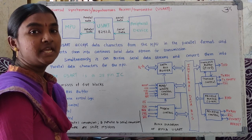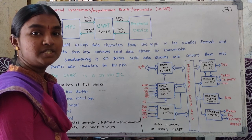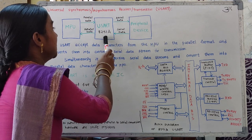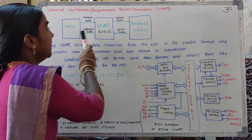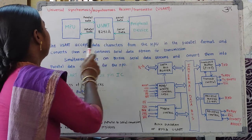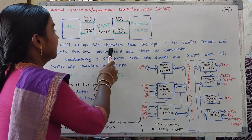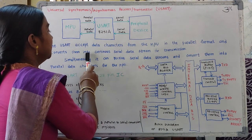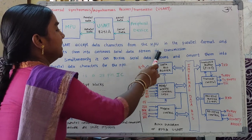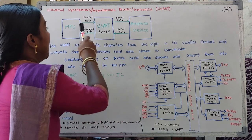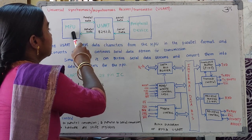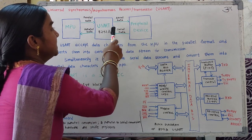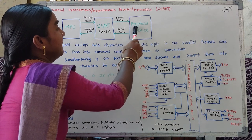The pin number of this USART we are going to use is 8251A. This is the block diagram of USART 8251A, which interfaces the microprocessor unit and peripheral device. The main function of the USART is that it accepts data characters from the microprocessor unit in parallel format and converts them into a continuous serial data stream for transmission. This parallel data is converted into serial form and transferred to the peripheral device.